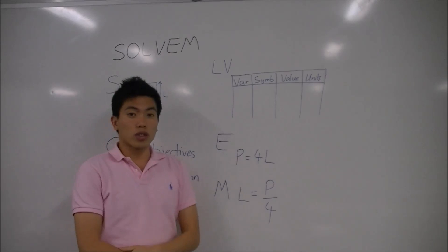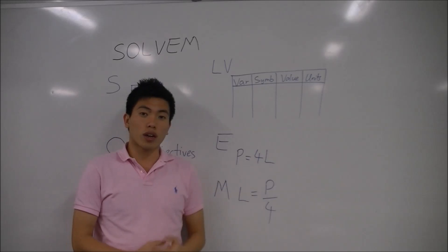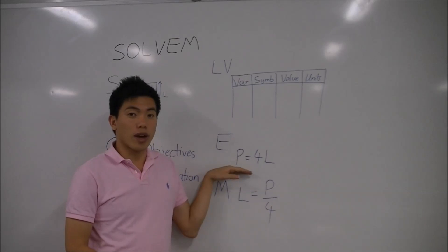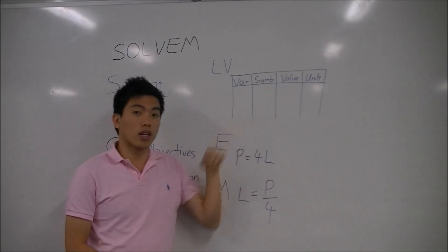In your E, which is your equations, write out the equations you think are important to your question or that you're given. The constants or variables found in your equations should be able to be found in your L and V section.